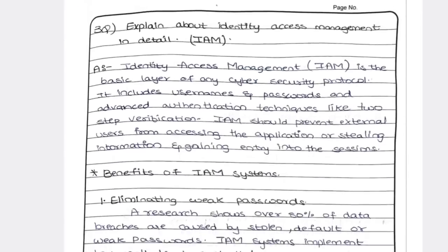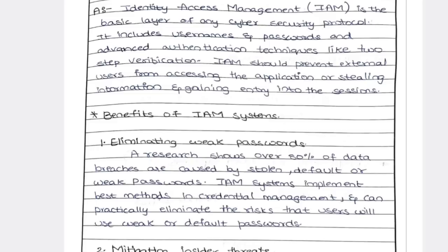The last question is IAM — Identity Access Management. IAM involves username, password, fingerprint, and different types of identity management. If someone is requesting access to an organization, they go through two-step verification — username, password, and confirmation from your original device. IAM benefits include eliminating weak passwords; it will suggest strong passwords and store them.